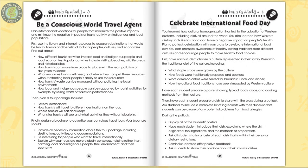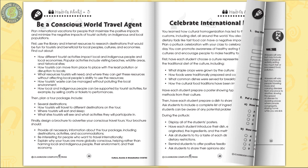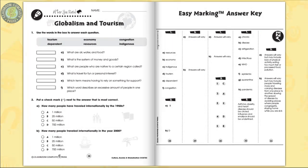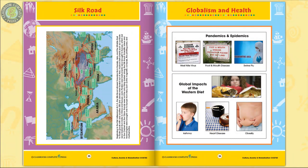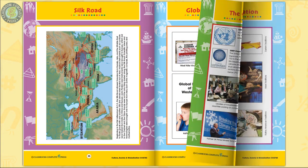Plan international vacations for people that minimize the negative impacts of tourist activity on indigenous and local populations. The easy marking answer key works by lining up perfectly with the matching question pages. Six color mini posters completes the resource.